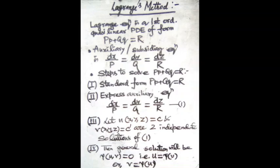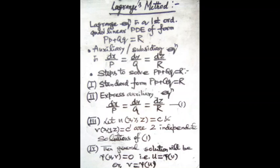In step three, we assume two independent solutions: u(x,y,z) = c and v(x,y,z) = c′, where these are two independent solutions of auxiliary equation (1). Step four gives us the general solution, which will be φ(u, v) = 0.